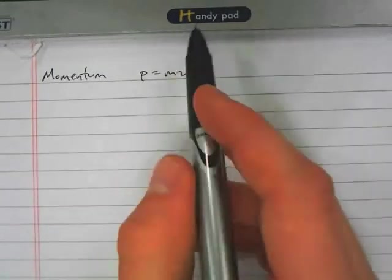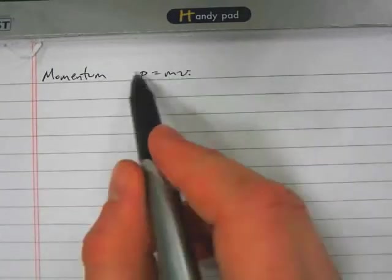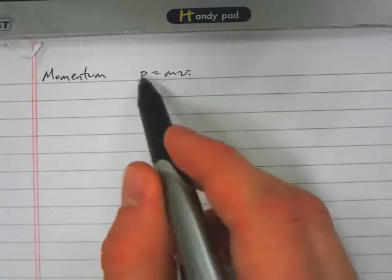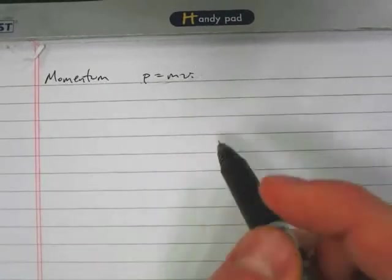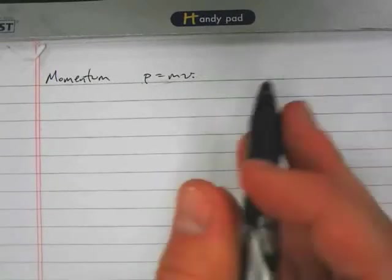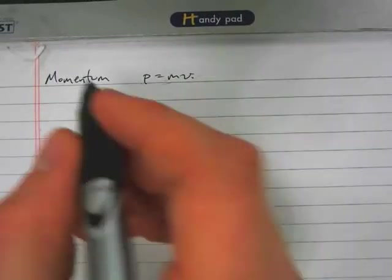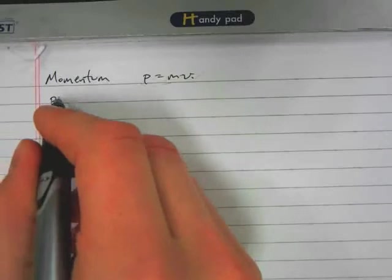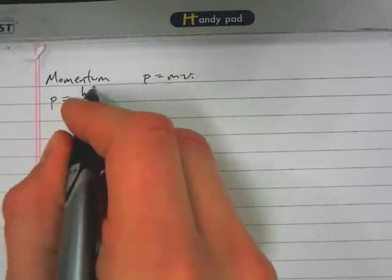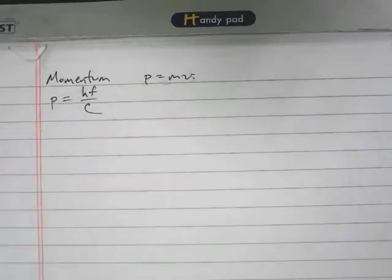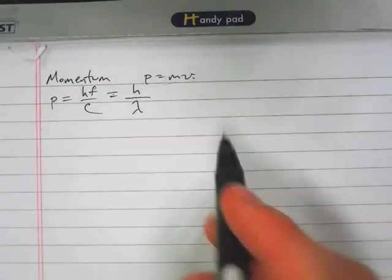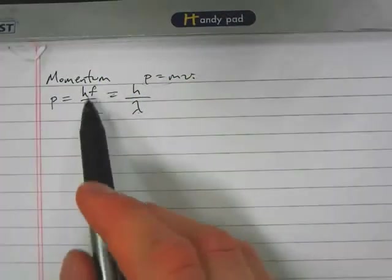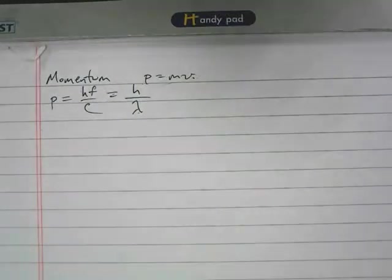Well, this definition of momentum applies to classical particles, but in terms of relativity and quantum mechanics, we define momentum as being h times frequency over c. That is the momentum of a particle, which we could also say is h over lambda, because lambda is equal to c over f. So that is how we find the momentum of a photon of light.